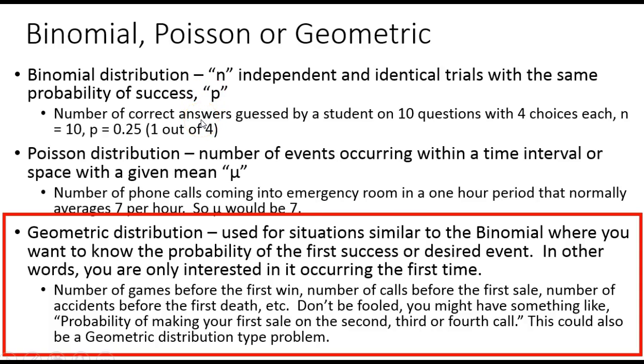Finally, we're going to look at a geometric distribution type problem. The geometric distribution is used for situations similar to the binomial, but you want to know the probability of the first success or the first desired event. In other words, you're only interested in it occurring the first time.